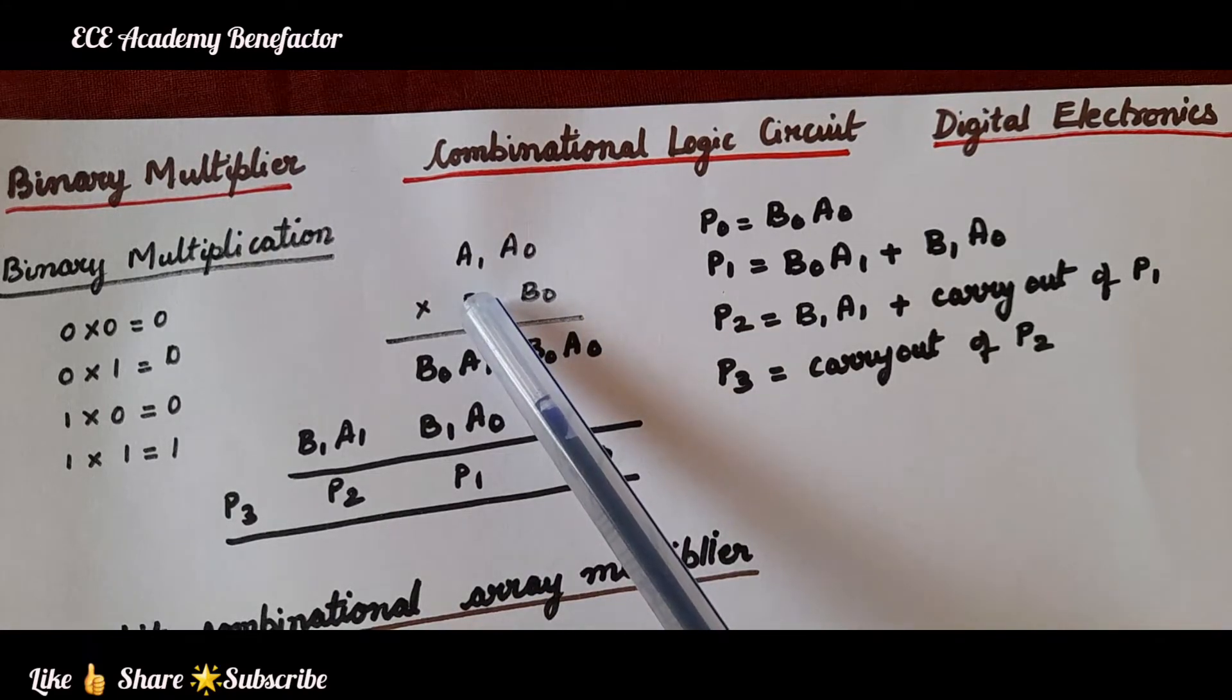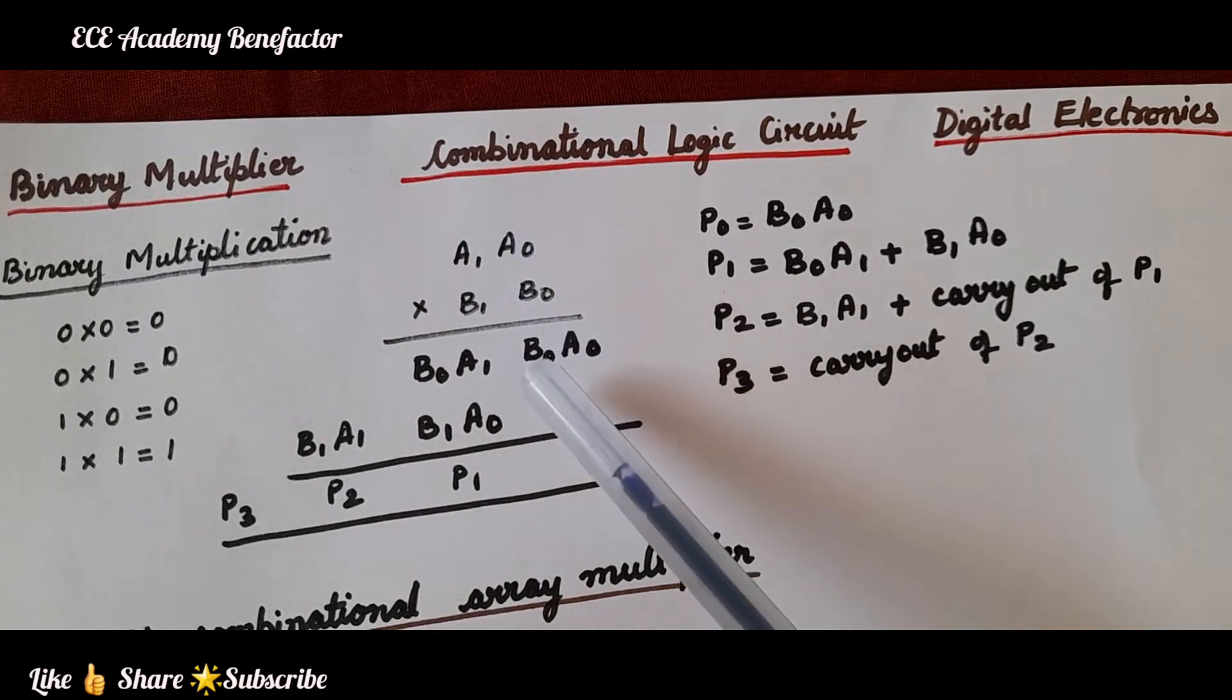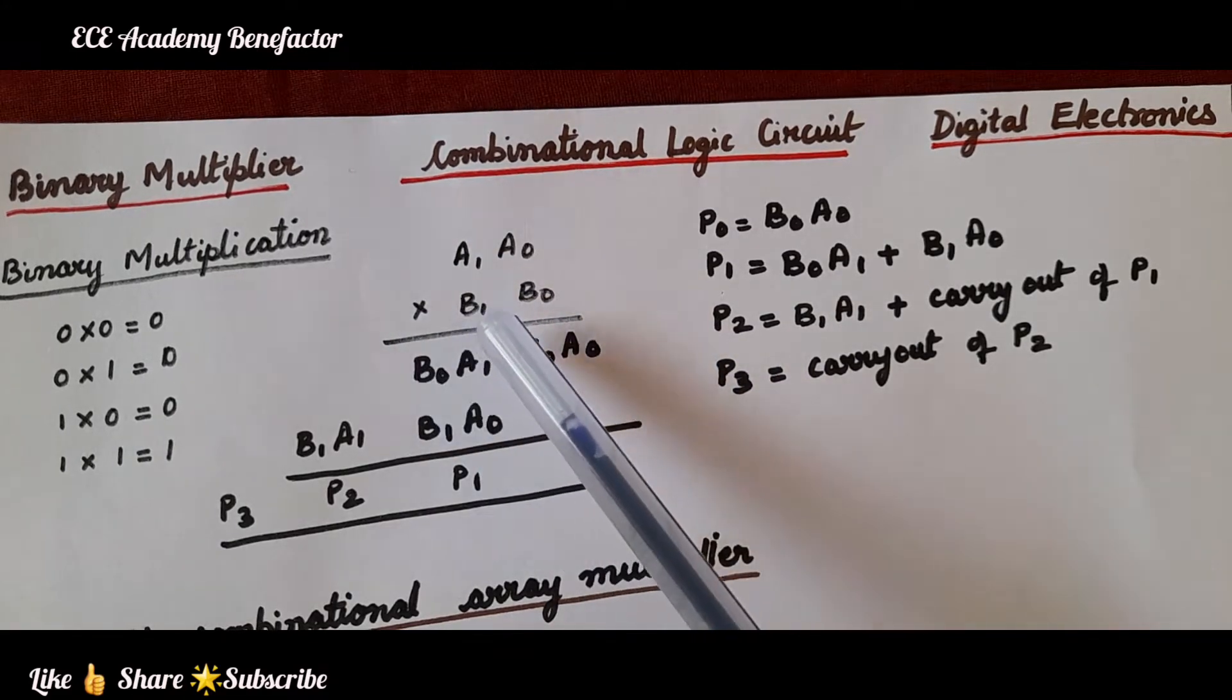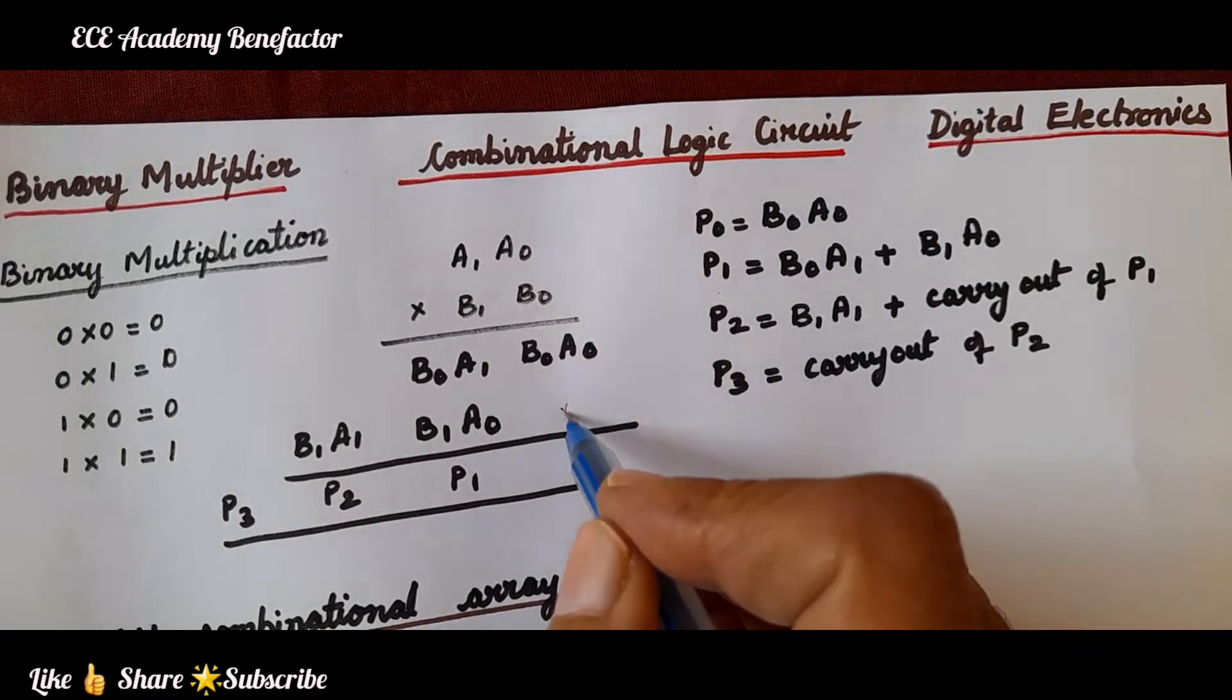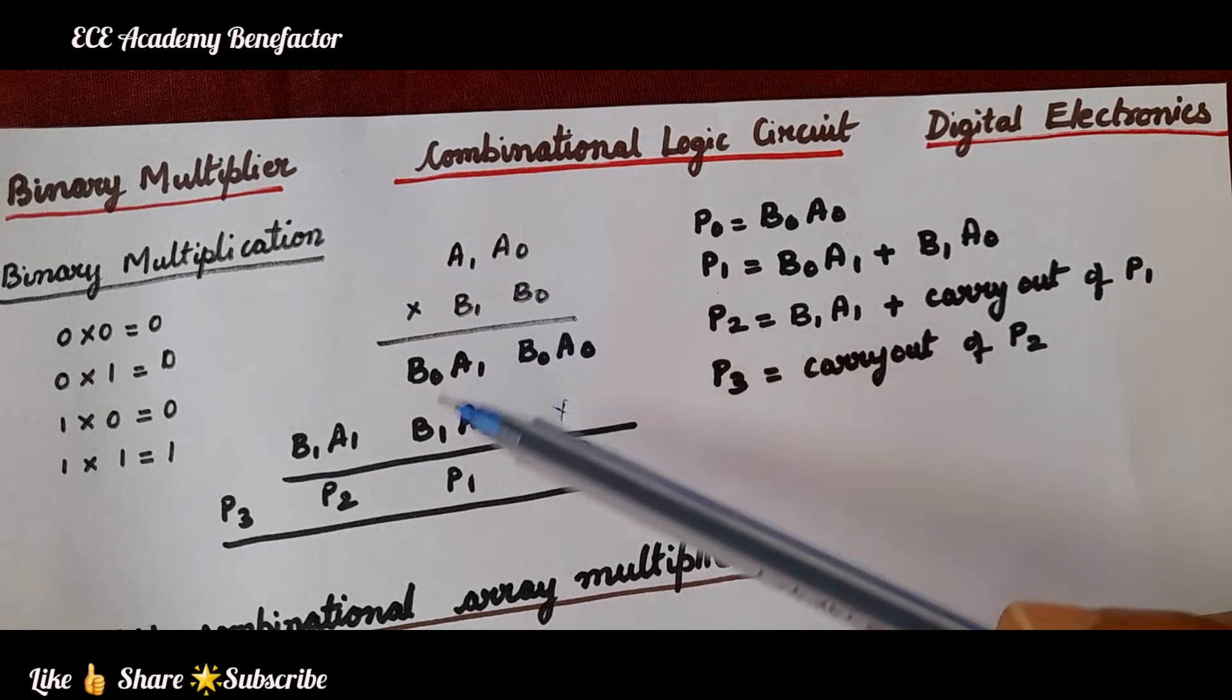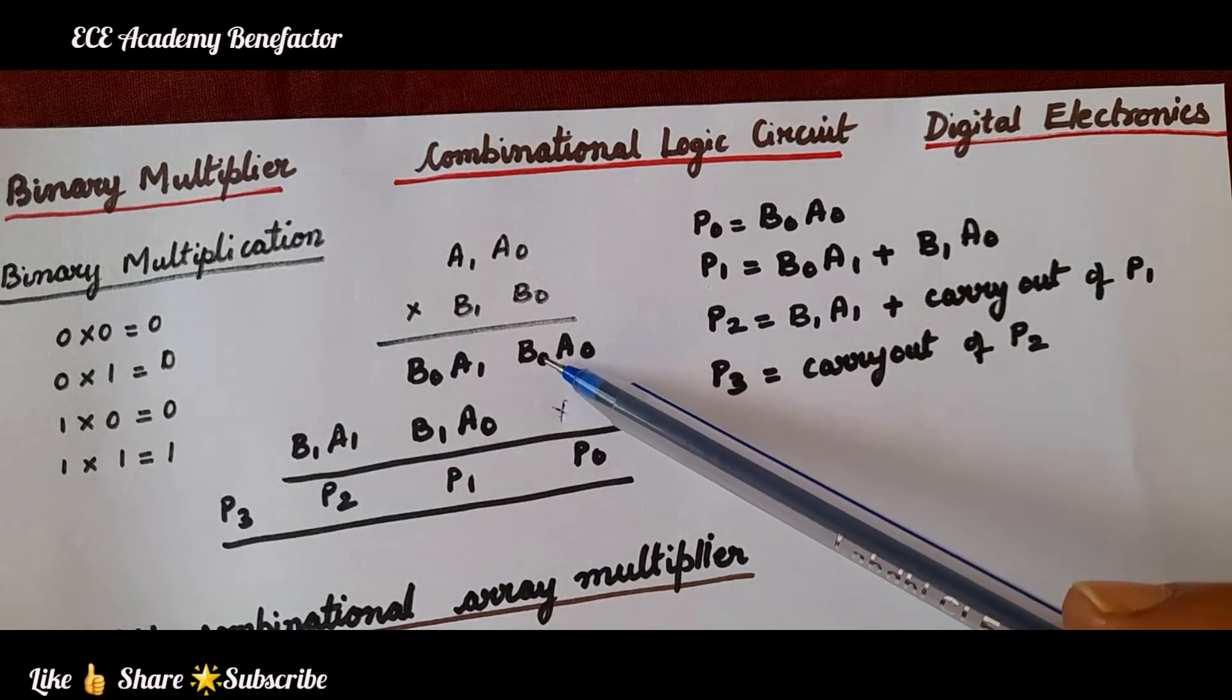As we do traditional multiplication, we do b0 into a0, b0a0, then we multiply this one b0 with a1, and then the second one we put a cross mark here and then multiply b1 with this a0, b1a0, b1a1.